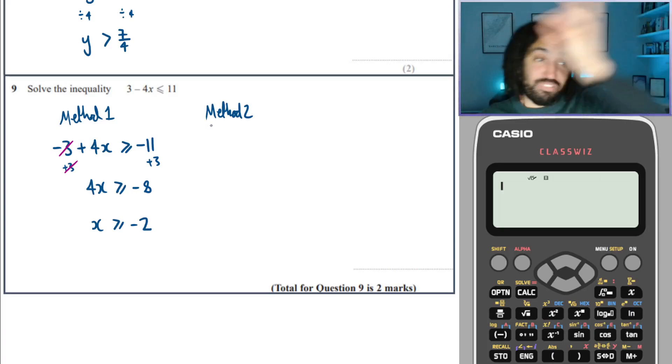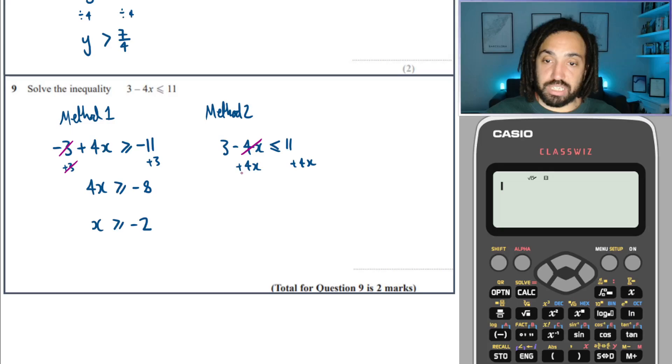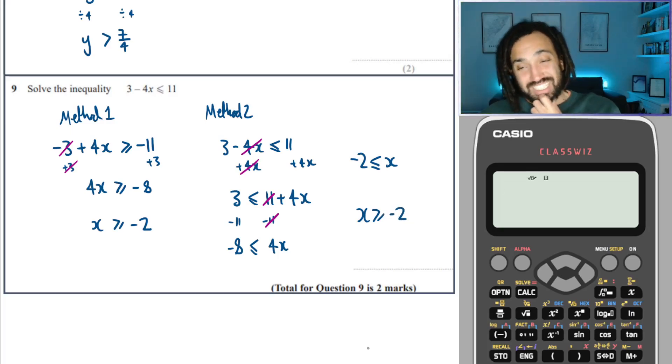Method two is just moving that 4x to the other side. And that will turn it positive and we don't need to worry about any flipping of signs. So adding the 4x to both sides. As this will cancel the minus 4x and the plus 4x will go. That will leave me with 3 is less than or equal to 11 plus 4x. I'm then going to subtract the 11 on both sides. So 11 and minus 11 will go. This will leave me with 4x. 3 minus 11 is minus 8. Divide through by 4 gives me minus 2 is less than or equal to x. And if we wanted to we could write it the other way around, x is greater than or equal to minus 2. I was starting to like method one actually.